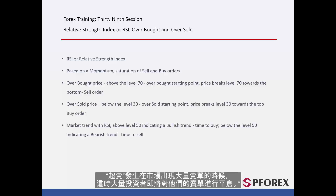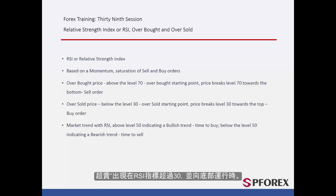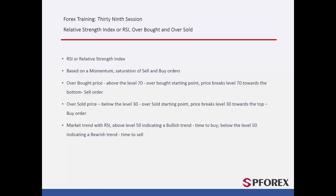Oversold is the time when there is an abundance of sell orders on a symbol, and a considerable number of traders are closing their sell orders. Oversold occurs when a trend in RSI passes the level 30 towards the bottom. Whenever price crosses level 30 towards the top, a buy order would be beneficial.